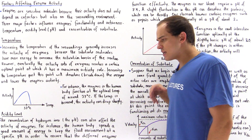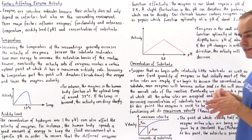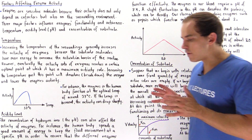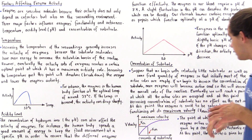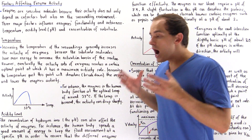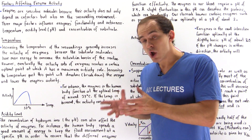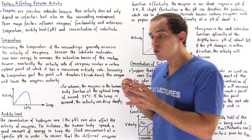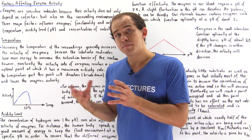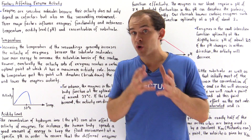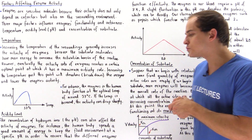We're going to discuss this in much more detail when we get into biochemistry, but at this point I simply want to mention the following important idea about the Michaelis constant. Km does not actually depend on the concentration — what it depends on is the type of enzyme we are dealing with. The Michaelis constant basically gives us information about the affinity or the attraction of the enzyme to our substrate.